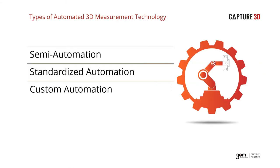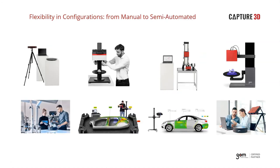Going back to automation, the three types we provide at Capture 3D and GOM are semi-automation, standard automation, and custom automation. We understand that every application and every process is a little different — not every customer or application requires a scan box. We have options ranging from small setups with a tripod and a simple Lazy Susan, up to desk-mounted systems, and then semi-automated solutions.